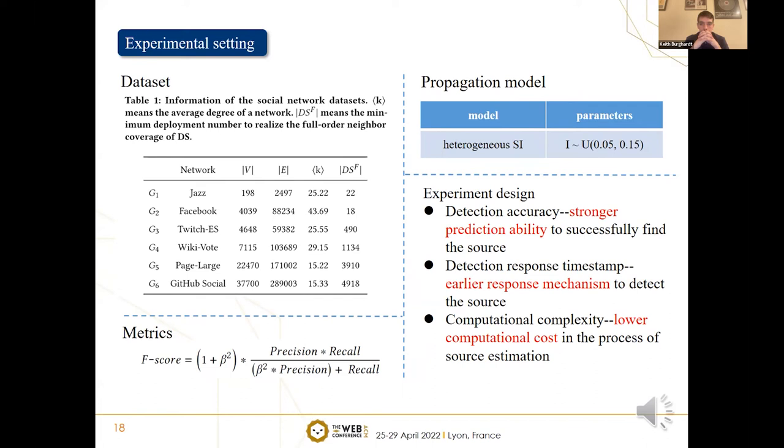More specifically, in order to further highlight the early localization capacity of GFNL, we implement some experiments to compare the response timestamp when the source estimation strategies of different methods are executed. And to rigorously evaluate the computational cost, the runtime experiments of different methods are implemented.